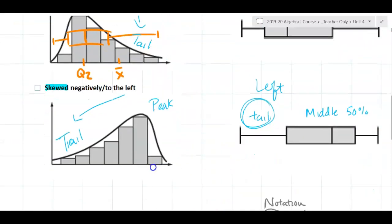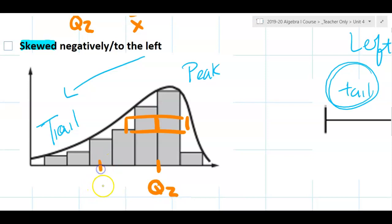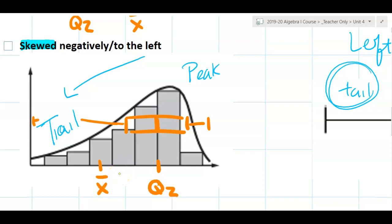When a distribution is negatively skewed, the tail is to the left and the peak — the middle 50% of the data — is to the right. The mean will be pulled down and will be less than the median. In a distribution skewed to the left, we have a longer tail to the left, telling us it's skewed to the left, and the mean is less than the median.